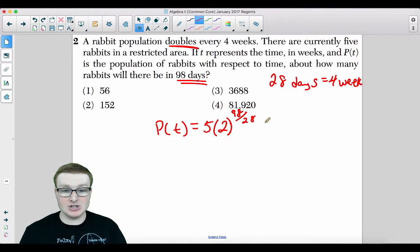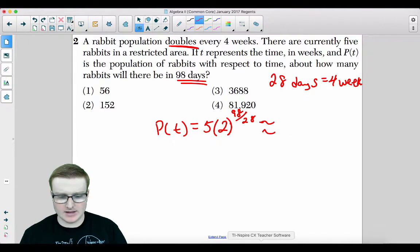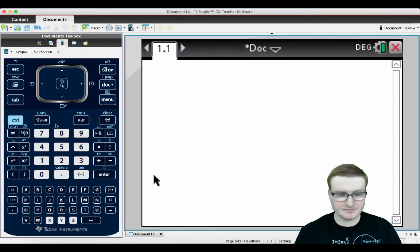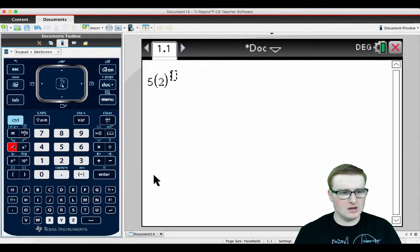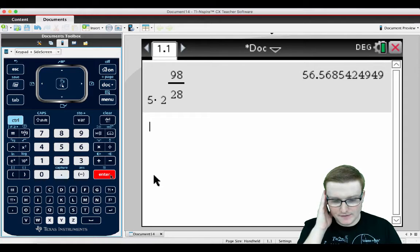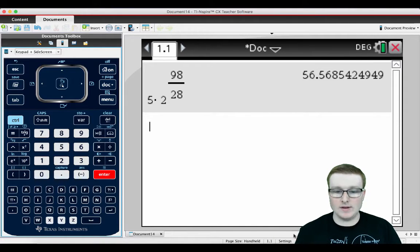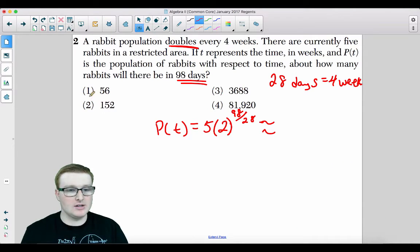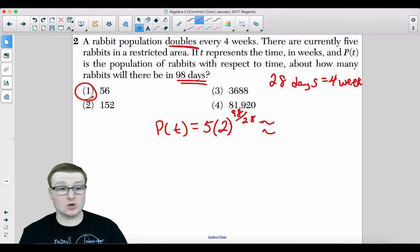When you type this into your calculator, 5 times 2 raised to the 98 over 28, that is going to be a population of 56.5 bunny rabbits. So your answer for that one is choice 1.